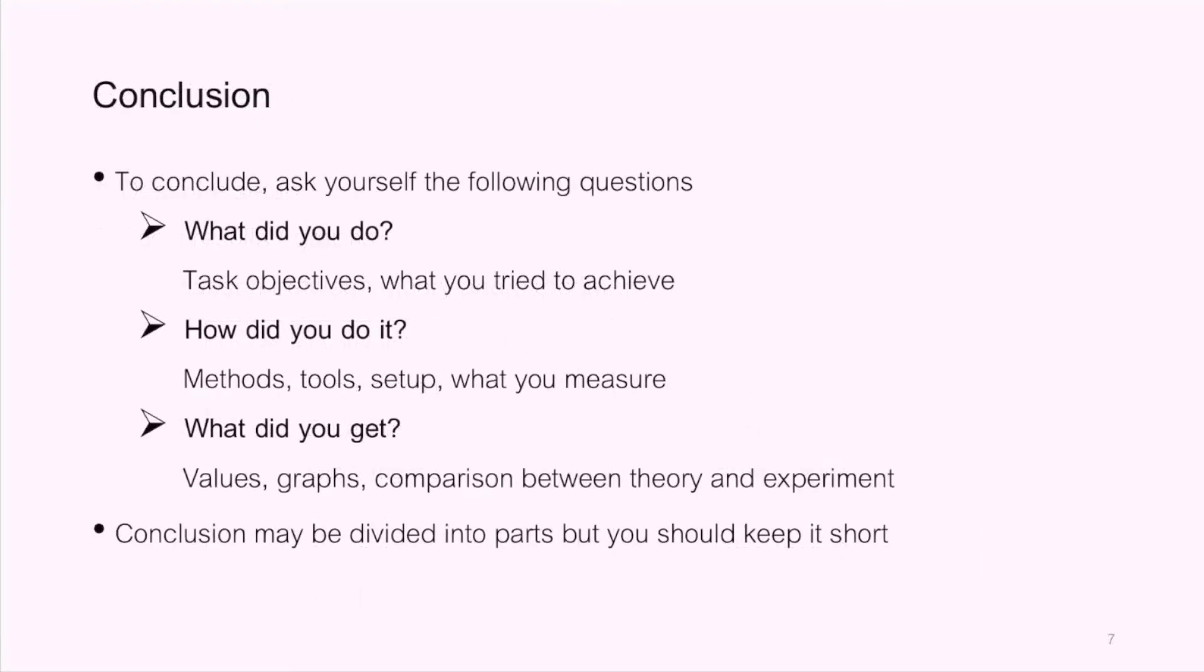Conclusion. To conclude, ask yourself the following questions. The first question is, what did you do? Think about task objectives and what you try to achieve. The second question is, how did you do it? Think about methods, tools, setup and the quantities that you measured. The last question is, what did you get? That includes values, graphs, comparison between theory and experiment. These questions for conclusion apply not only in oral presentation, but also in written report or publication. Conclusion may be divided into parts, but be concise.